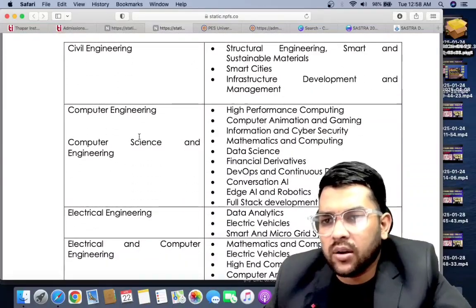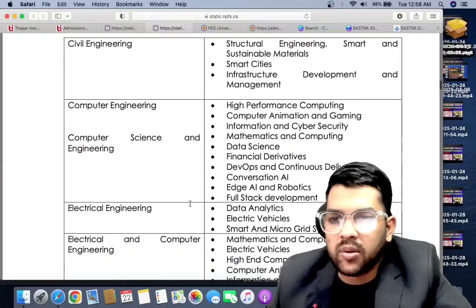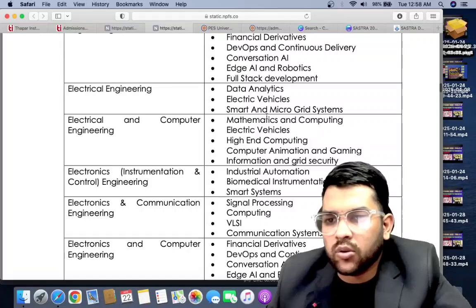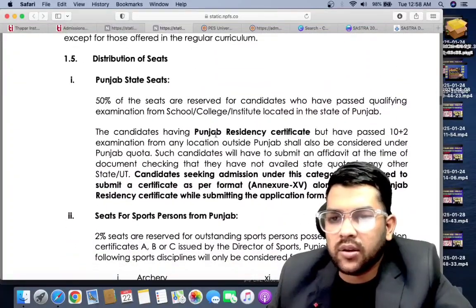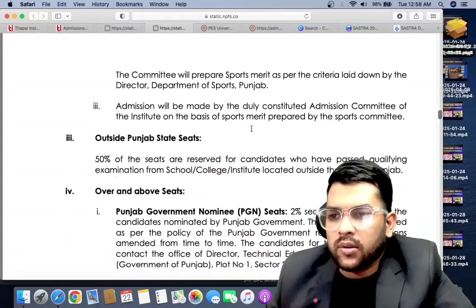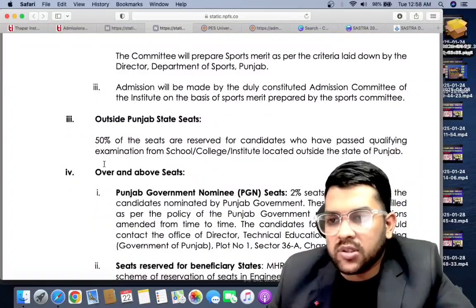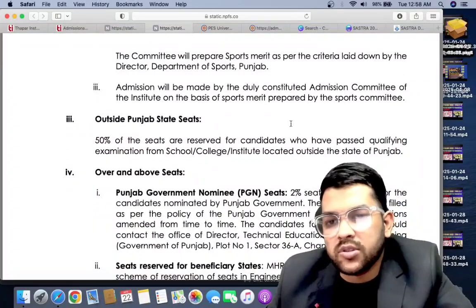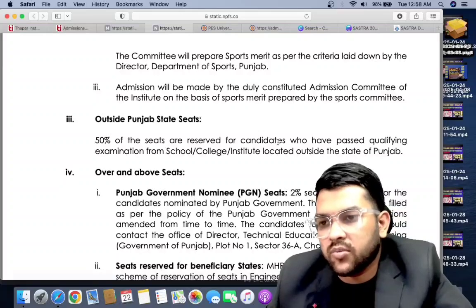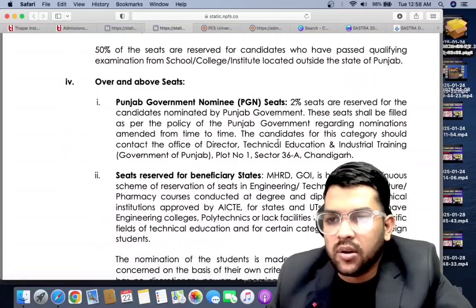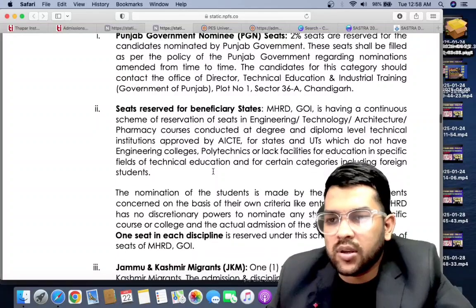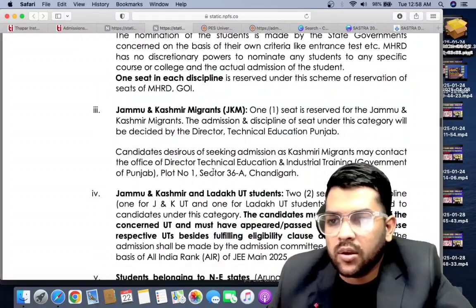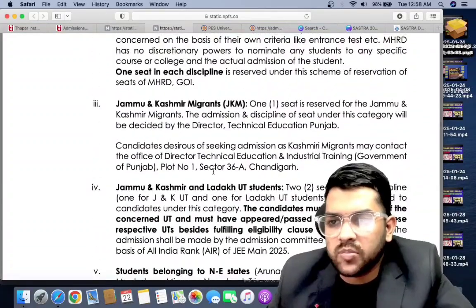Here you can check different types of branches with minors they have provided and what are the goals of the branches. Now I will inform you: outside Punjab state, 50% seats are reserved for outside Punjab students, 50% for Punjab students. Here is the Punjab government nominee seats reservation.